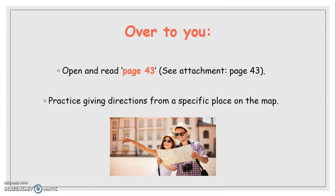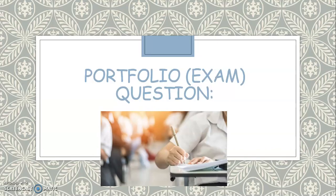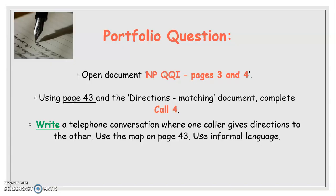Okay, so open and read page 43. Practice giving directions from a specific place on the map. This is the portfolio or the exam question. Open National Pen QQI pages 3 and pages 4. Using page 43 and the directions matching document complete call 4. Write a telephone conversation where one caller gives directions to the other. Use the map on page 43 and use informal language.